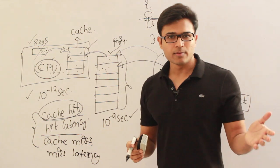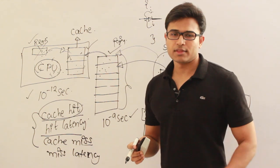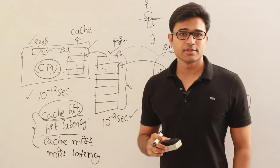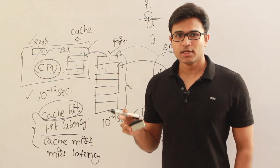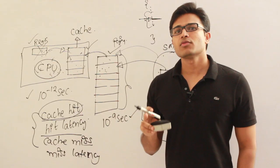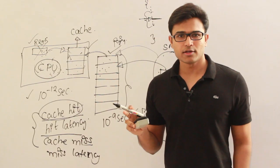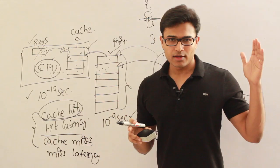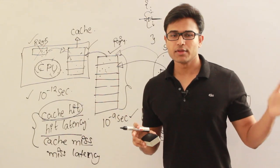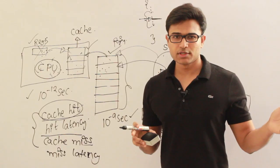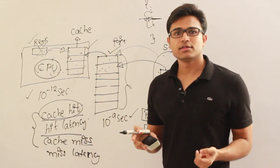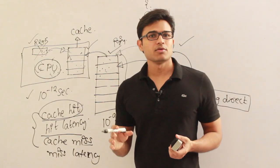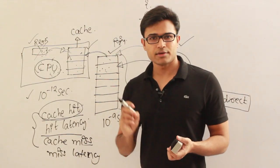Temporal locality says that the least recently used element is going to be used again. That is why in page replacement the most frequently used algorithm is LRU — Least Recently Used. LRU takes care of temporal locality. Temporal locality means whatever was last referred — the least recently used — is going to be used again.